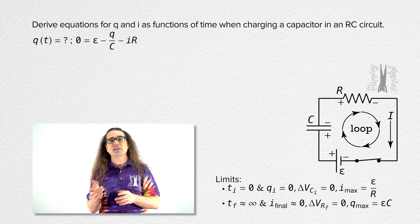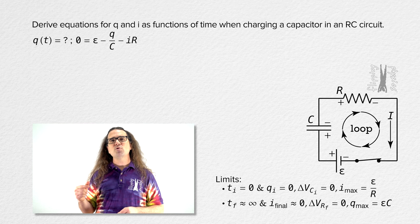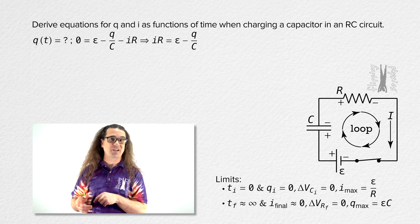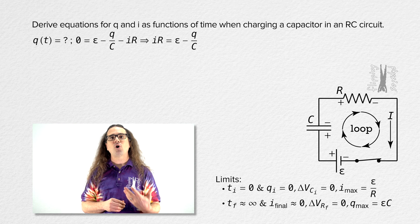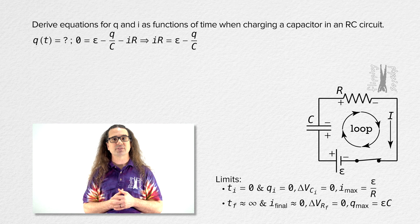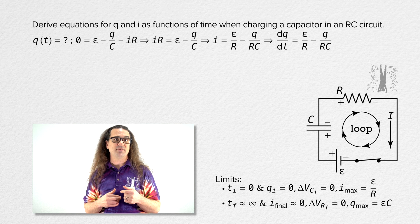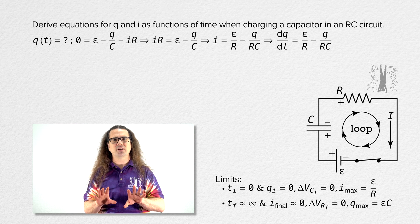Starting with our Kirchhoff's loop rule equation, we move current times resistance to the other side of the equation, then divide the whole equation by resistance. We know current equals the derivative of charge with respect to time.